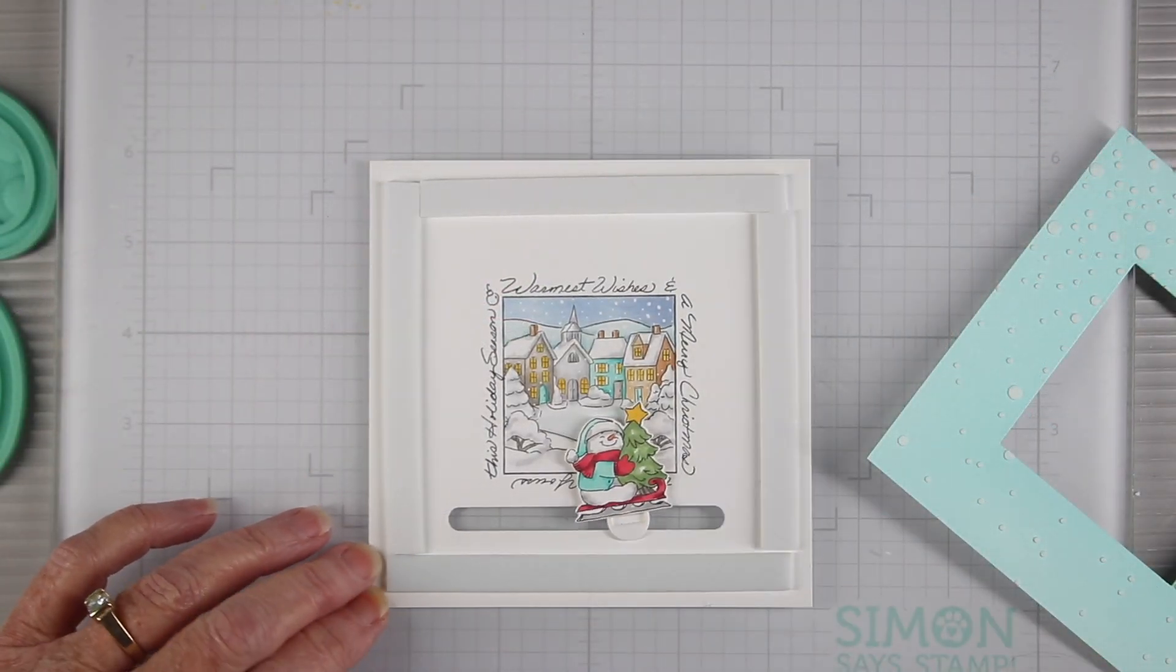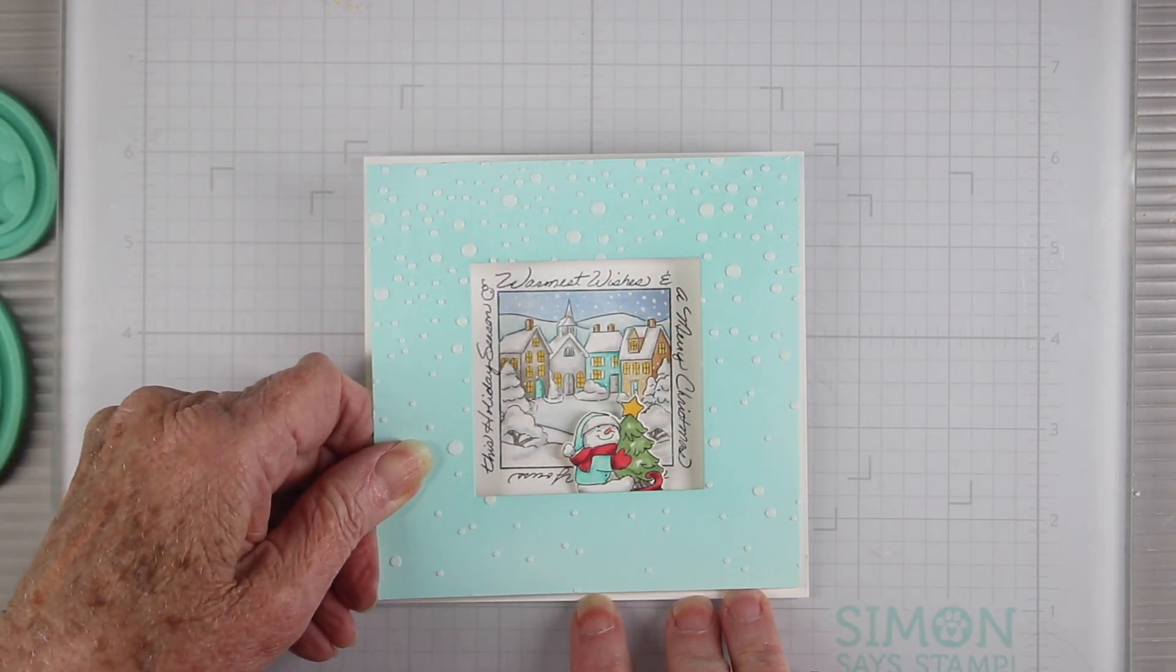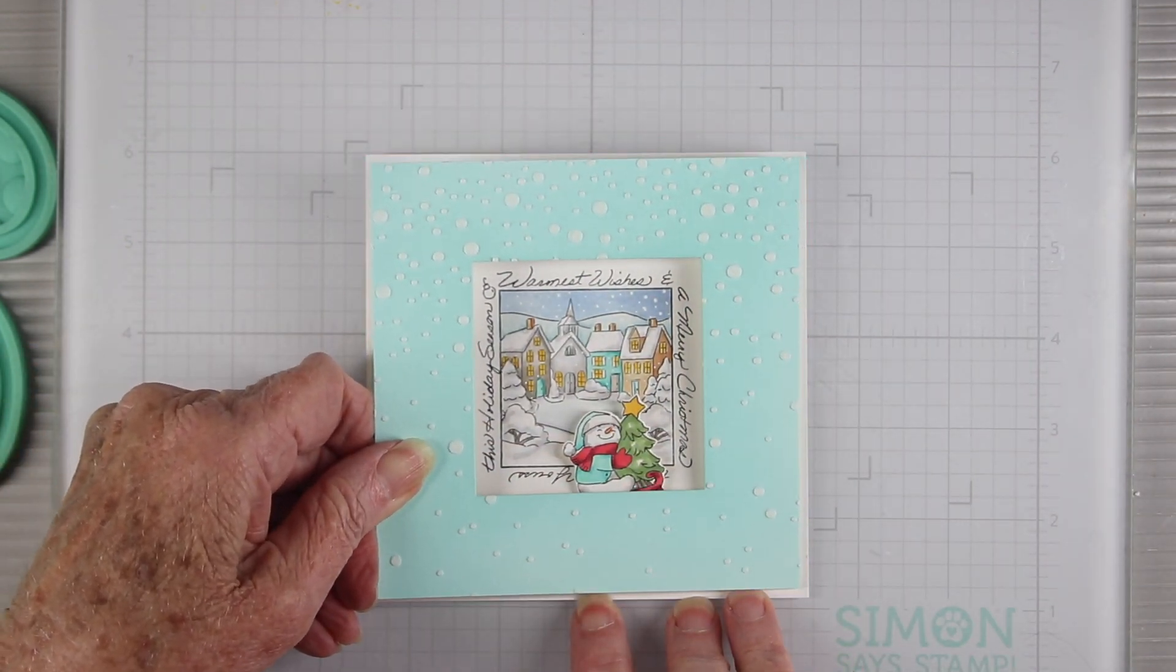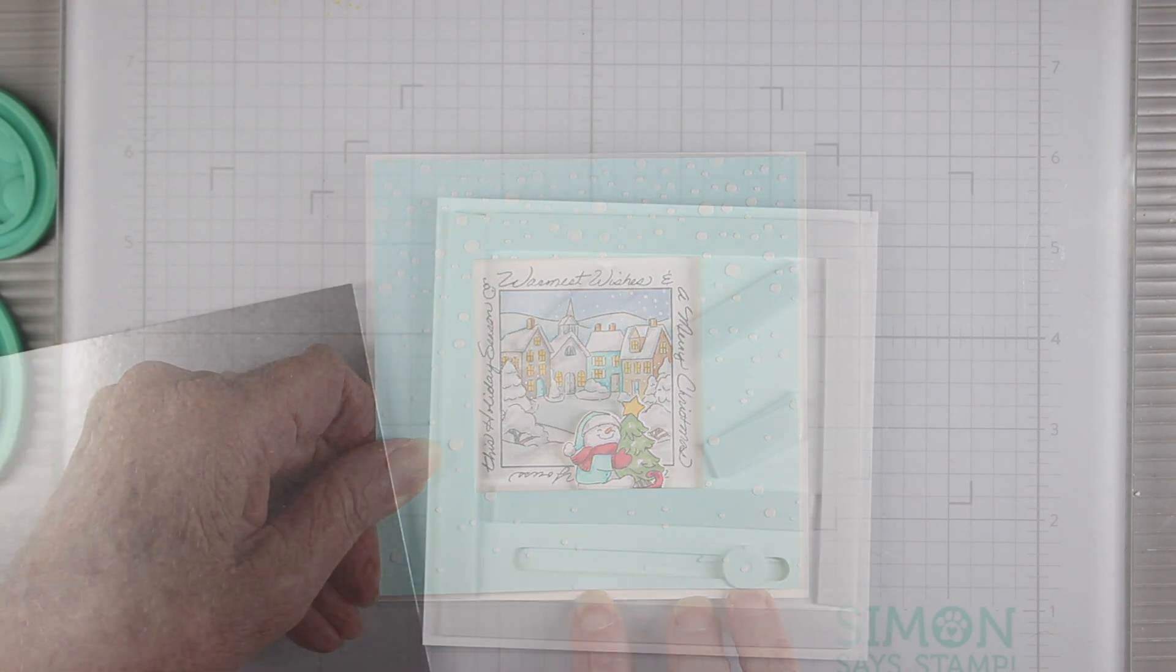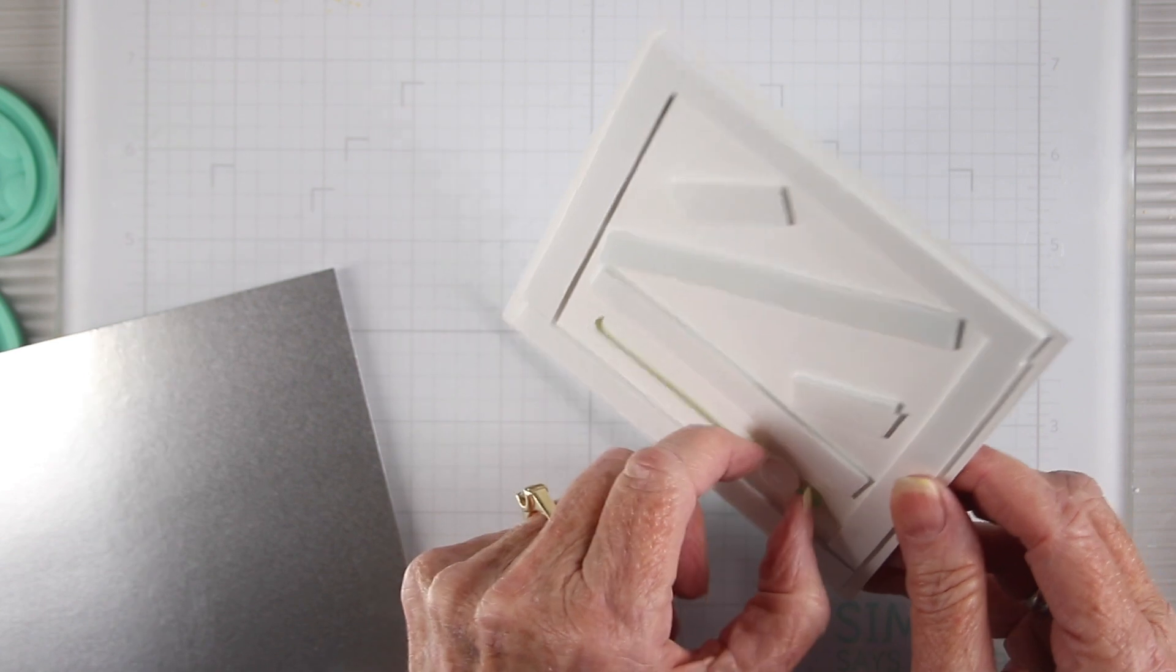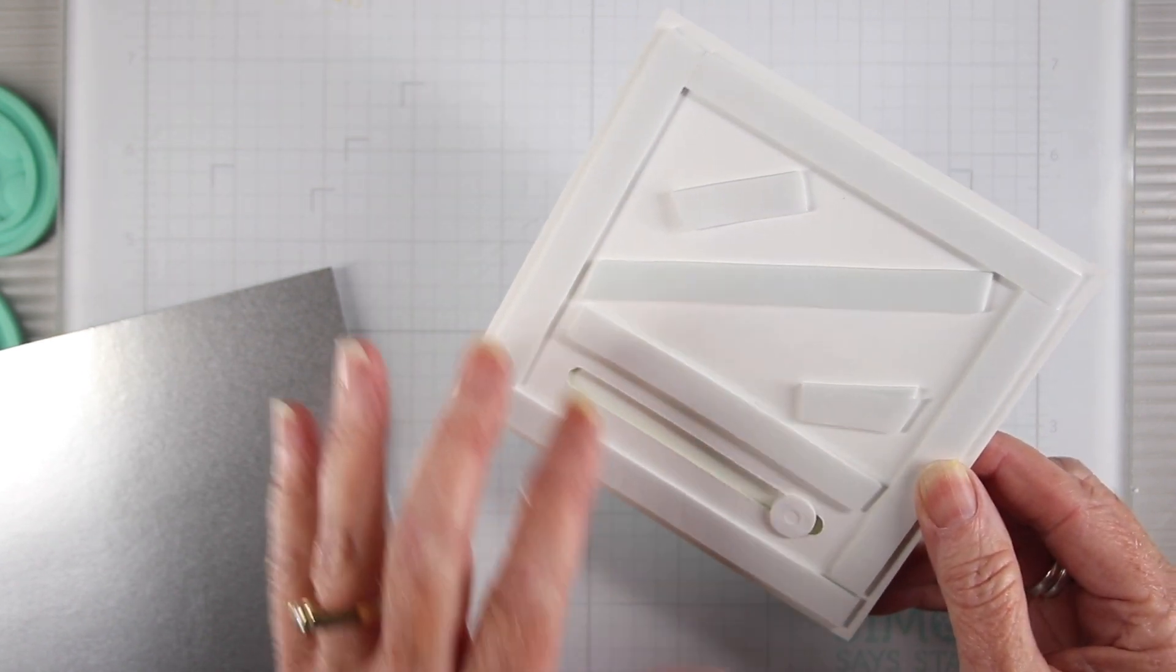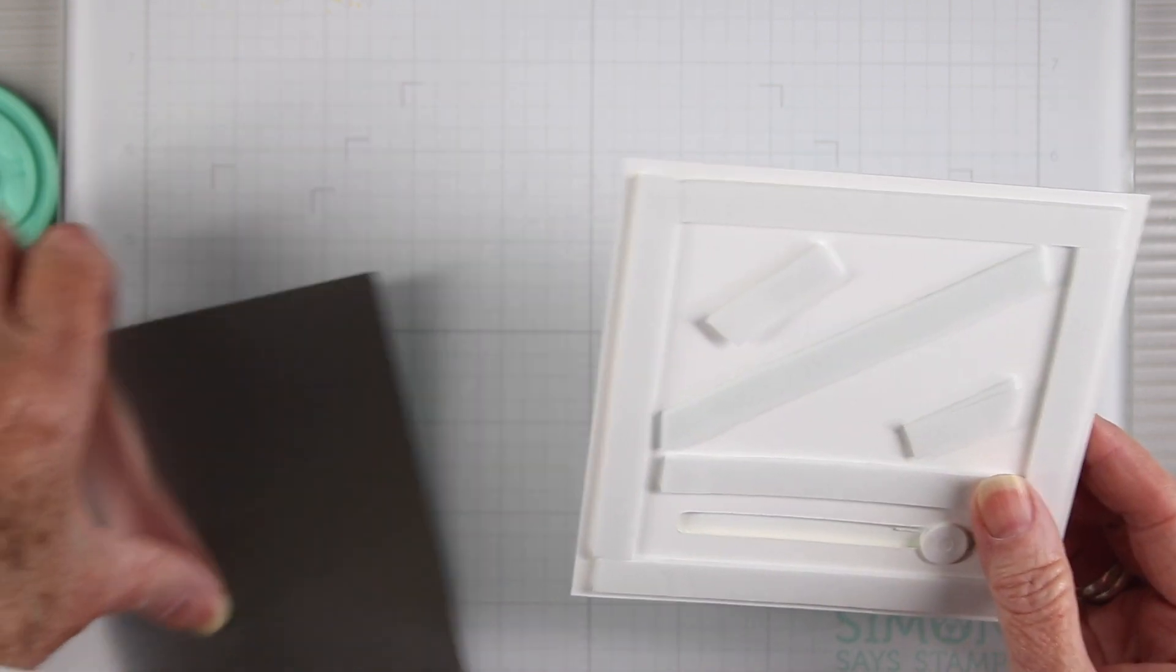I've added the foam tape on all four sides of the back panel and now I'll just attach the frame right on top and make sure that I have that centered. I've also added foam tape to the back side and I wanted to make sure that I'm staying clear of that glider. You'll need to lift this up so that it can glide freely.